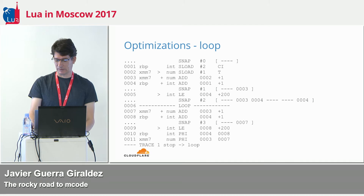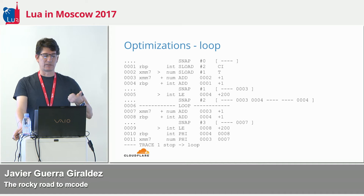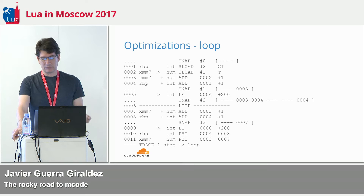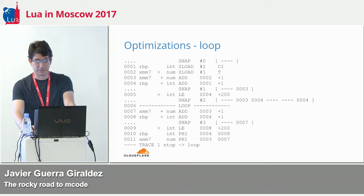That's why in the table.insert example, the table queries — getting the global value 'table' and then the 'insert' field — when repeated within the loop, are mostly free due to loop invariant hoisting.